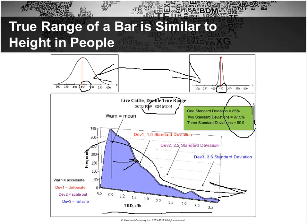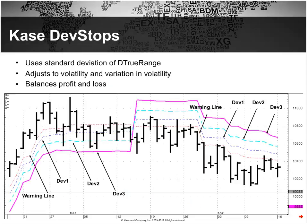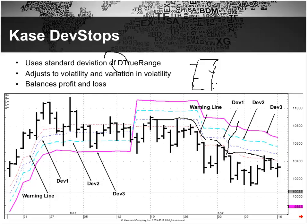If you got stopped out at our first level stop, there'd be an 85% chance it was random and a 15% chance the market is trending in that direction; then 97.5% and 99.9% for the second and third level stops. Here's what the stops look like within CQG. The D stands for double true range — standard deviations of the double true range, which is the true range of two bars combined. Even though the math is rigorous, it looks simple when plotted. The red warning line signals when the market is turning, and then we have three level stops so you can scale out over stops one, two, and three.